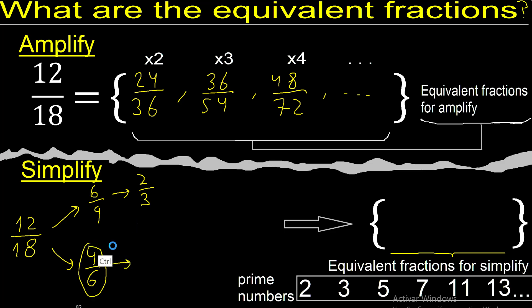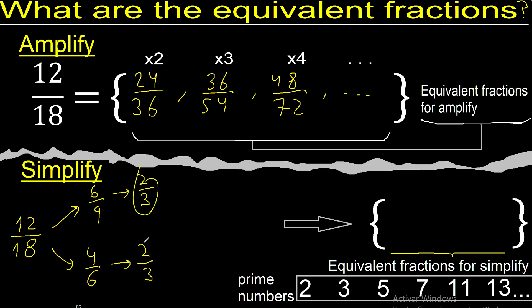Divided by 2: 4 divided by 2 is 2, 6 divided by 2 is 3. 6 and 9 cannot be divided by the same number. Therefore...